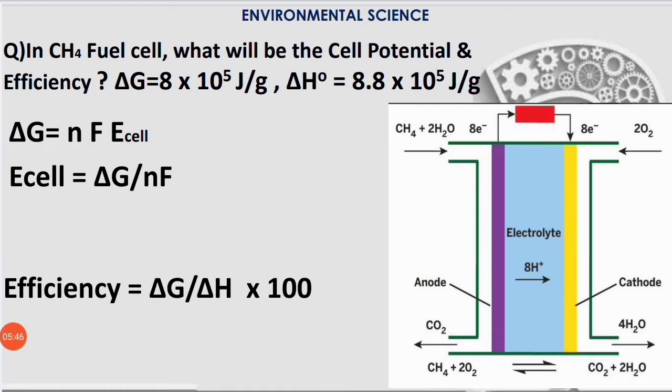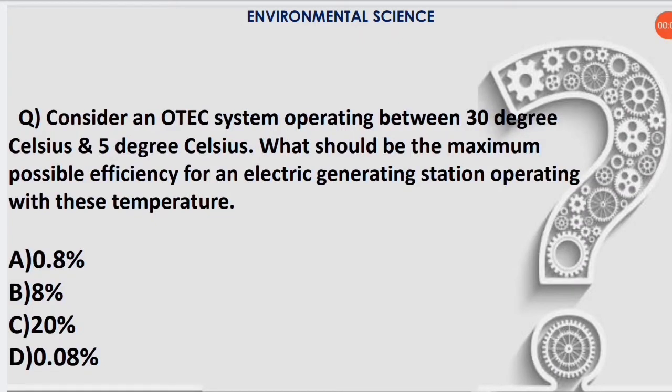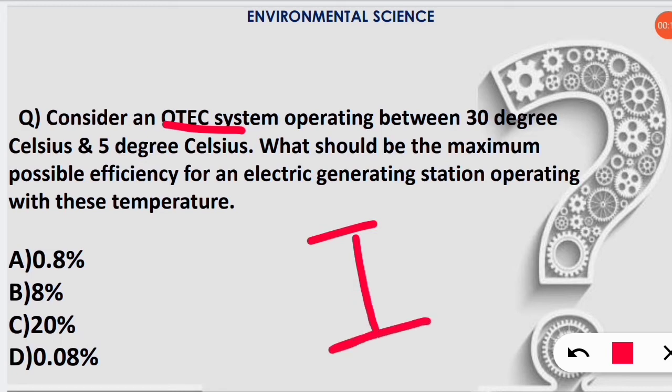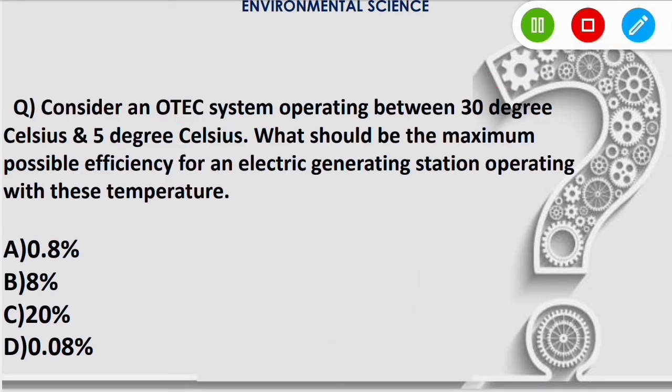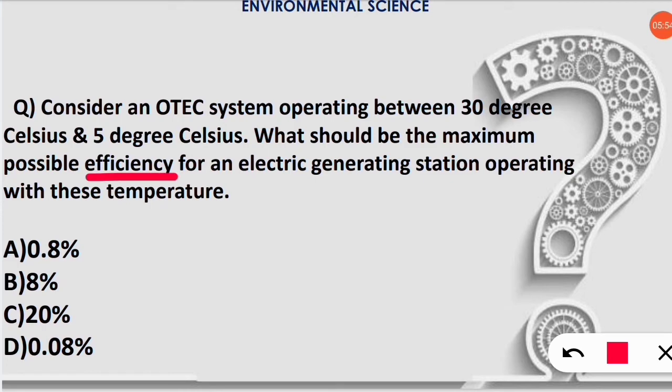The next question is from OTEC (Ocean Thermal Energy Conversion) system. The question says an OTEC system is working between two different temperatures. We know there has to be a temperature gradient. One temperature is 30°C (higher temperature) and 5°C (cold reservoir). The question asks to find the maximum possible efficiency. The formula is: efficiency = 1 - T_c/T_h, where T_c is temperature of cold reservoir and T_h is temperature of hot reservoir.